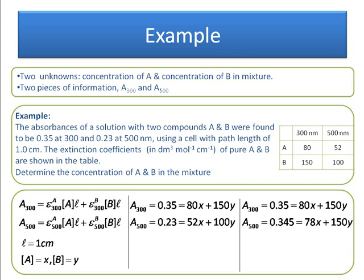I now have two simultaneous equations: 0.35 equals 80x plus 150y. I'm going to solve this by elimination, so I'm going to match up the y values. So here I'm multiplying the absorption at 500 across by 1.5, so both my y values are 150y. If I subtract the second equation from the first, I get 0.005 equals 2x.